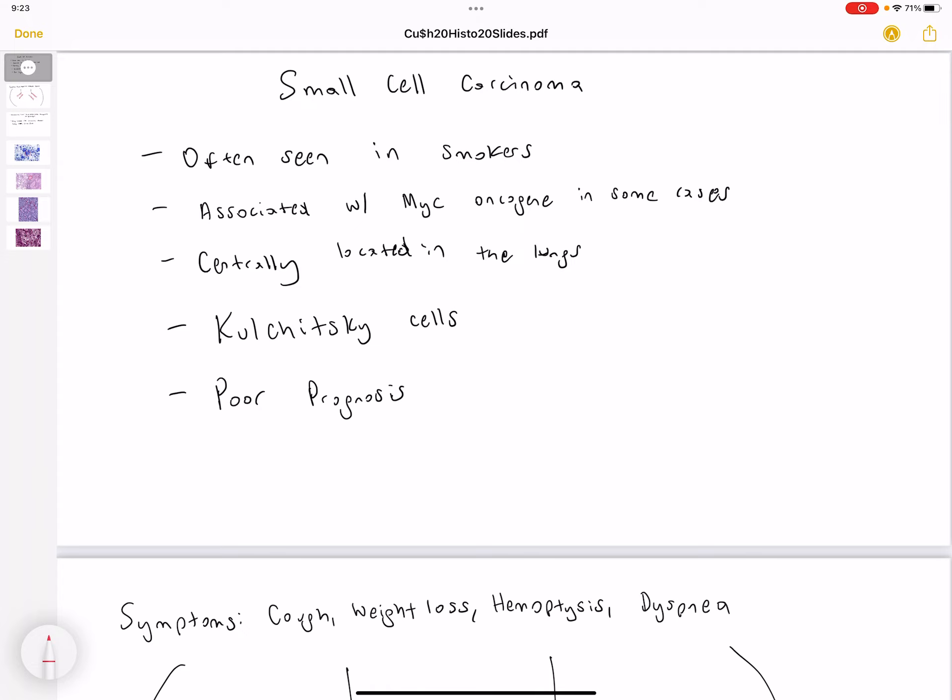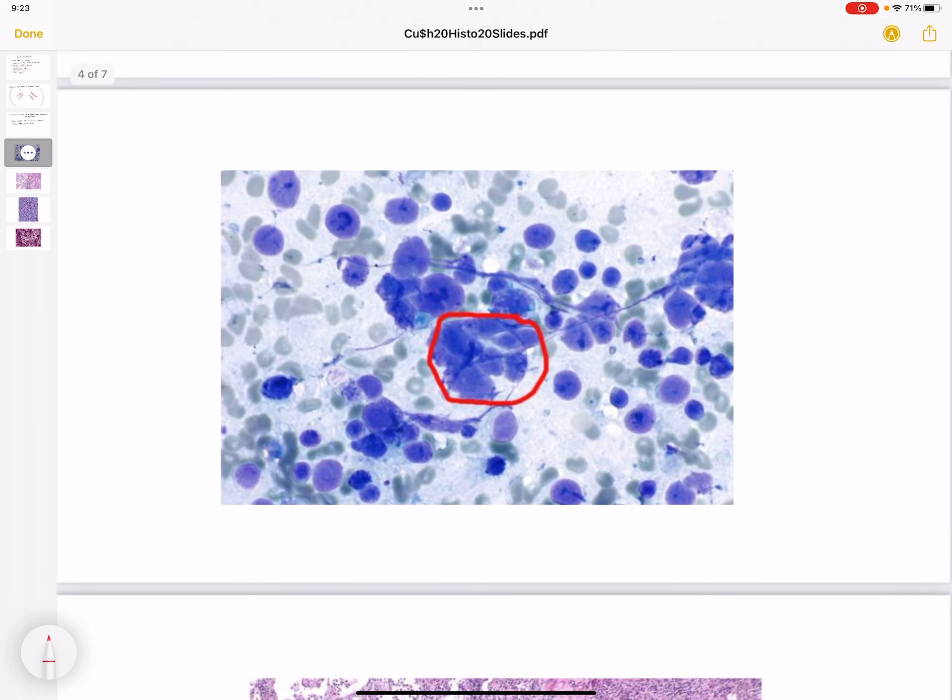Now, histologically, what we can see is these Kulshisky cells. Here is a histological slide of small cell carcinoma. In the red, I've circled Kulshisky cells. These cells are very underdifferentiated. As you can see in this picture, the borders are poorly defined. The cells are going on top of one another.